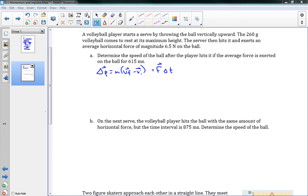So we can rearrange this to solve for a final speed. So we have vf minus vi is equal to f delta t over m. So then we can find that vf here is equal to f delta t over m plus vi, which we've said is equal to 0. So now we can plug in all of our values. We know that the average force is 6.5 newtons. So we have 6.5 times our delta t, which is 615 milliseconds, so 0.615 seconds. And we divide that by the mass, the mass of the volleyball, 0.260 plus our initial speed there. And this gives us a final speed of 15 meters per second.